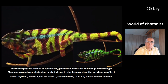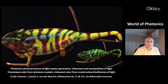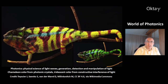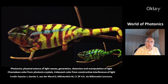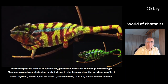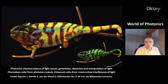Here's a very nice example: the color change of a chameleon. It comes from photonic crystals. The iridescent color comes from constructive interference of light. In this short movie, you can see the change from green color to yellowish color.